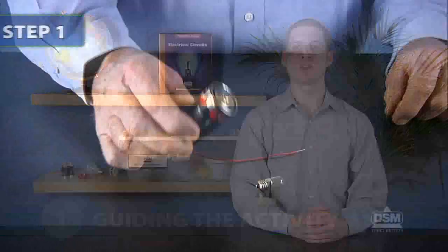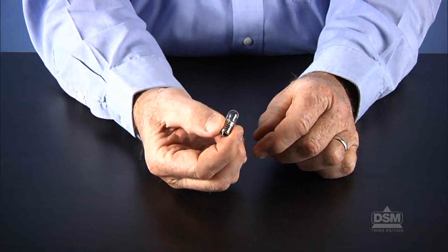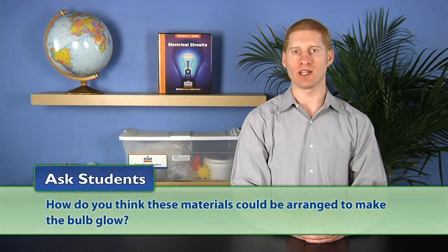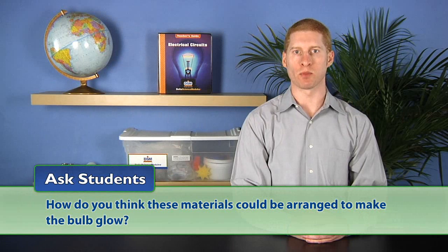To begin the activity, hold up a battery, wire, and bulb. Ask students, how do you think these materials could be arranged to make the bulb glow? Encourage students to brainstorm different arrangements of these materials.